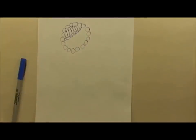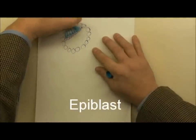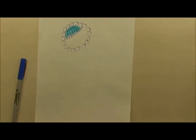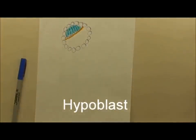And these cells, these tall cells, are known as the epiblast, right here in blue. And the cells that are in contact with the blastocyst cavity are known as the hypoblast cells.